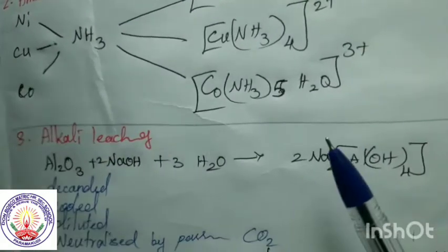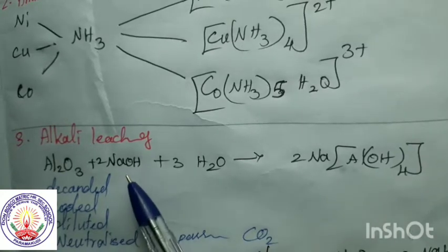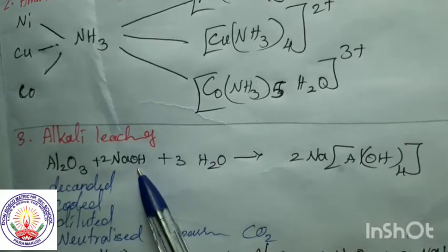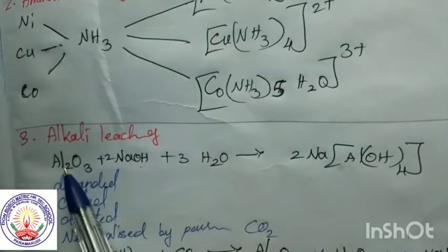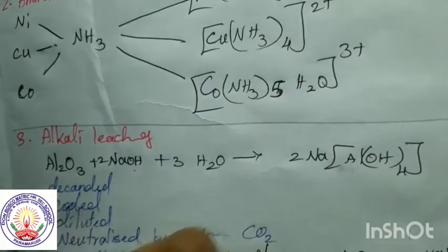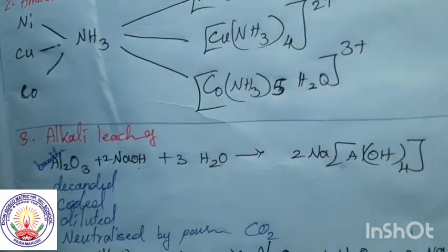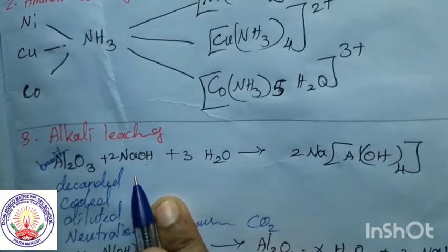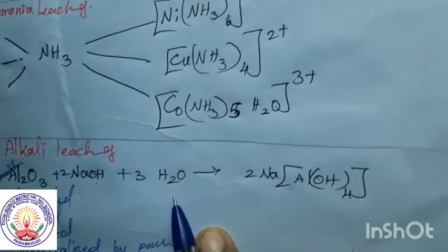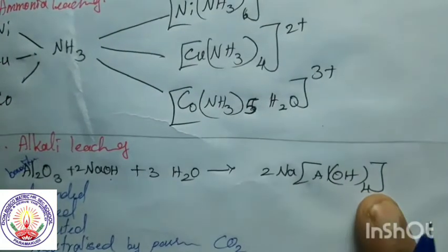Next, we shall see alkali leaching. Here, we are treating with one of the alkalis, that is sodium hydroxide. This is bauxite — the chief ore of aluminium. Al2O3 is bauxite, and it is treated with alkali in aqueous medium so water is present. When we treat this bauxite ore with alkali, we get sodium aluminium hydroxide as a complex.